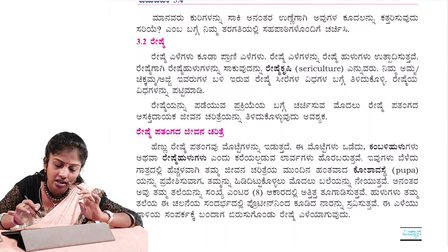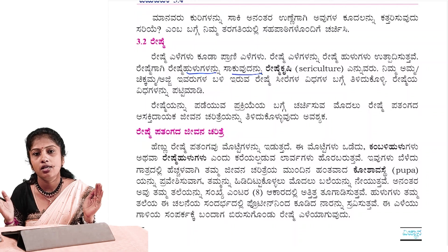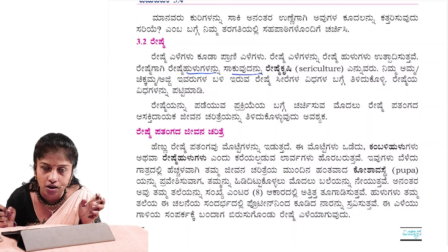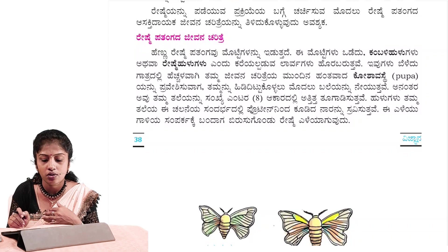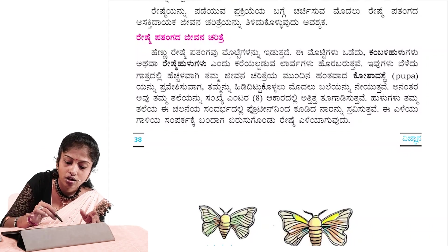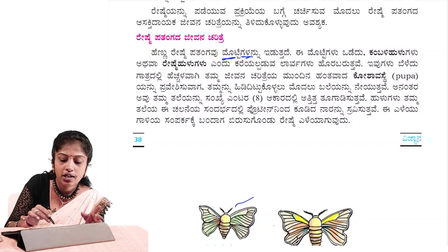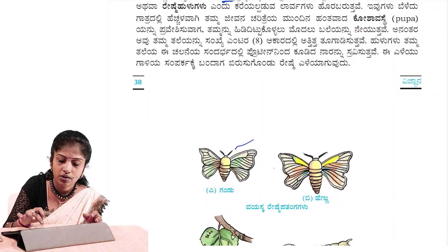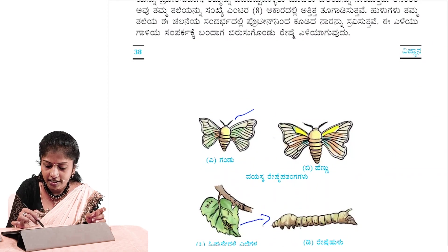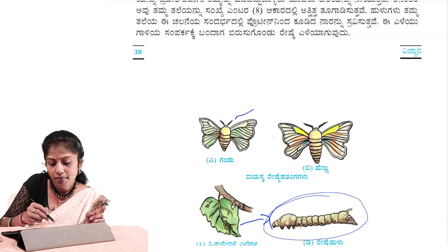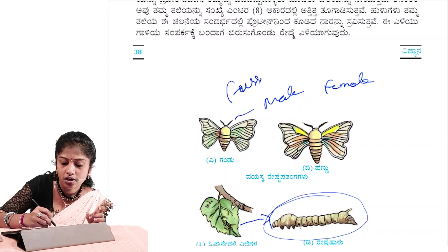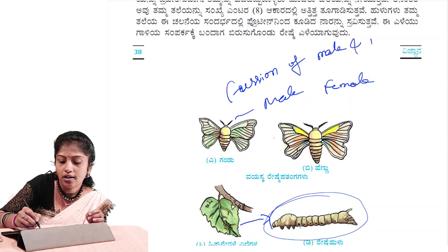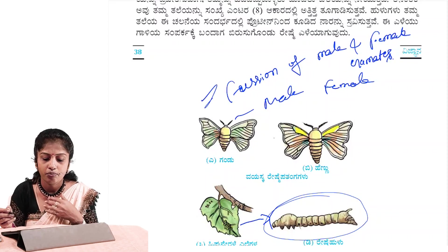The next one is Sericulture. You can add the life cycle to complete the silk life cycle. These sericulture organisms have a life cycle. On top is Fertilization — the fusion of male and female gametes.